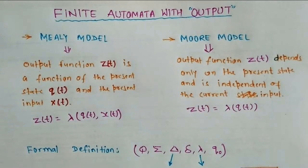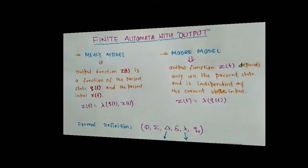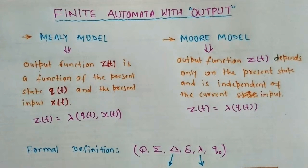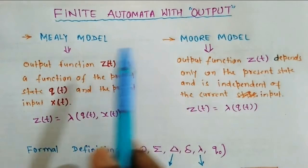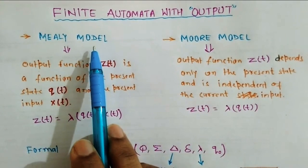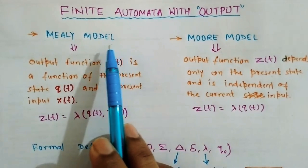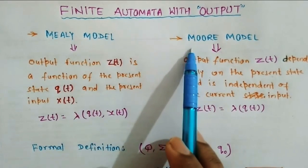Hi everyone, welcome to this video lecture. Today we are going to understand the concepts of finite automata with output. In earlier videos we discussed simple finite automata, also called binary finite automata, in which the machine either accepts or rejects — that is why we call those binary automata. Here we have two variants of finite automata with output: one is the Mealy model and another is the Moore model. If you give some input, the machine will also generate output. We will first understand Mealy, then Moore.